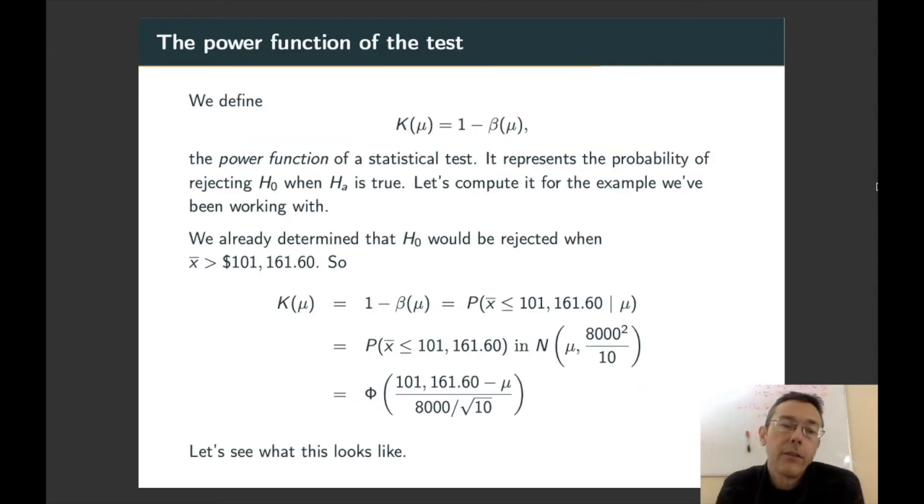Okay, time to define statistical power. K as a function of mu is going to be 1 minus that beta. So this is a function, of course. It represents the probability of rejecting H0 when HA is true. So here we're writing it in a more affirmative way than we did with beta. We're saying, what's the probability of actually detecting that alternative hypothesis is true under specific assumptions about that alternative hypothesis? In other words, what the population mean actually is in different situations.